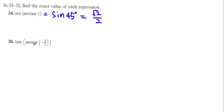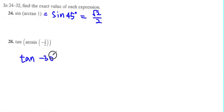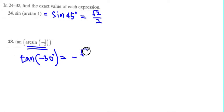Now if sine is negative, the principal angle for sine goes from negative 90 to positive 90, so this must be in the fourth quadrant where tangent is also negative. That means this becomes tangent of negative 30 degrees. Tangent of negative 30 degrees equals negative radical 3 over 3.